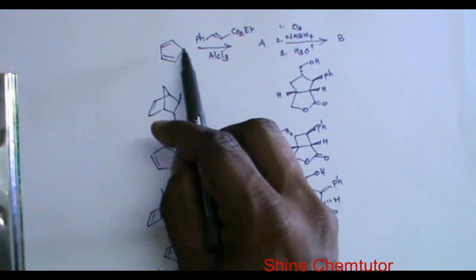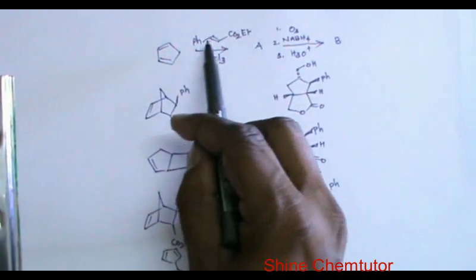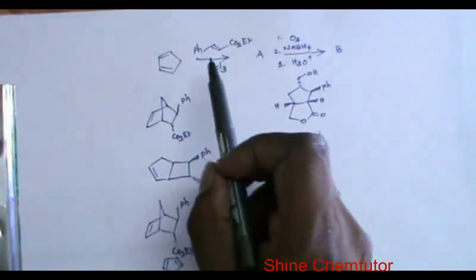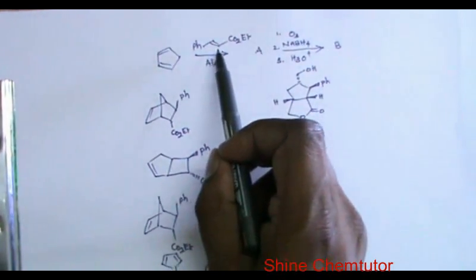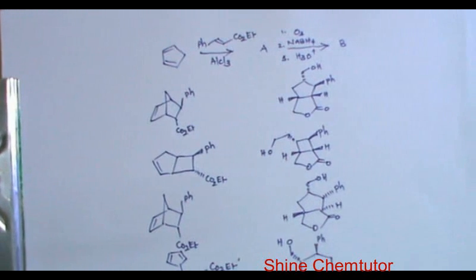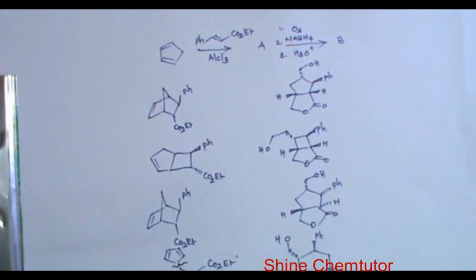An anion has been generated here and the anion undergoes 1,4 addition to this alpha-beta unsaturated double bond — so basically it is Michael addition.